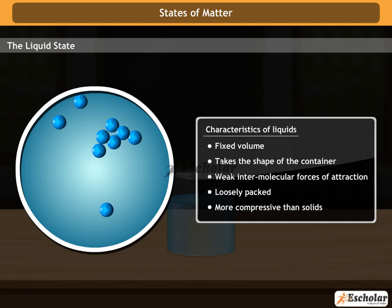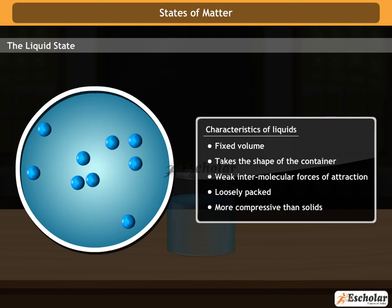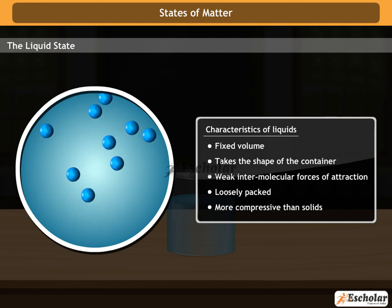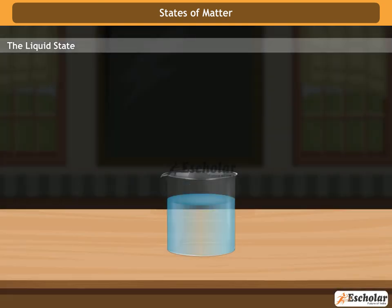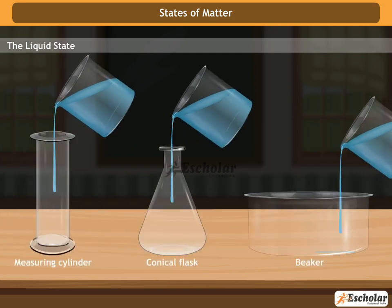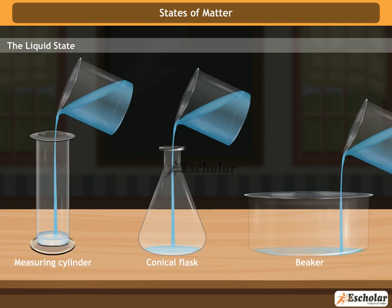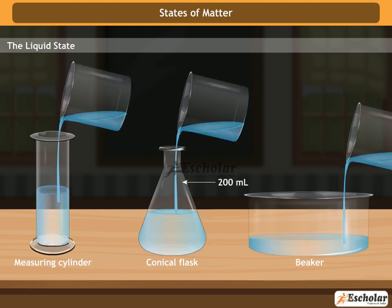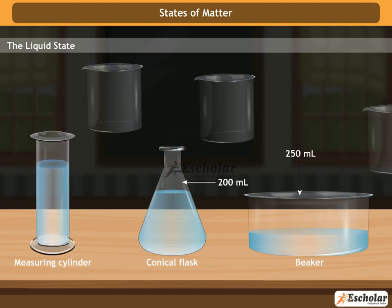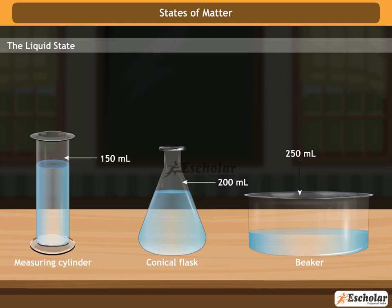The characteristics of liquids can be understood better with the help of an activity. Take 100 ml of water in a container and pour this water into different containers such as 200 ml, 250 ml, and 150 ml, and observe the level of water.